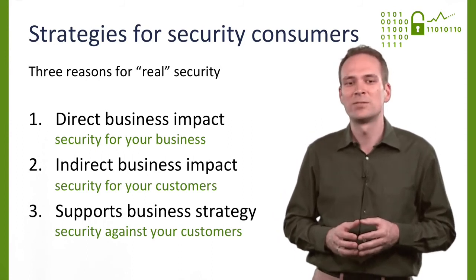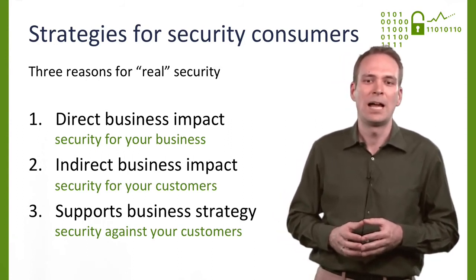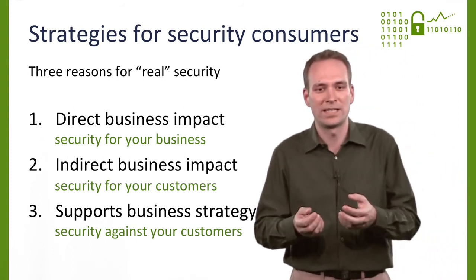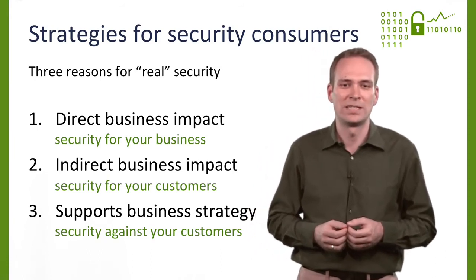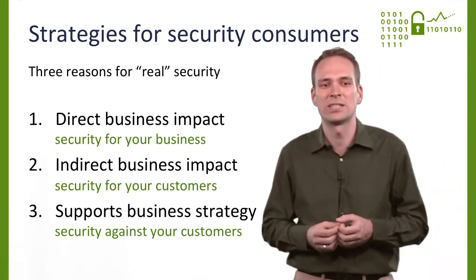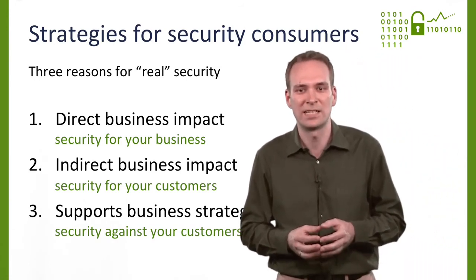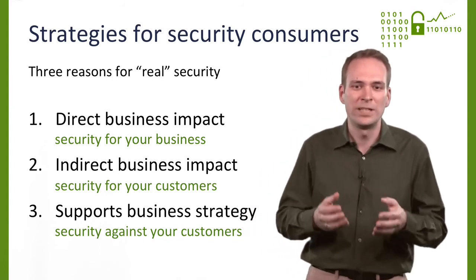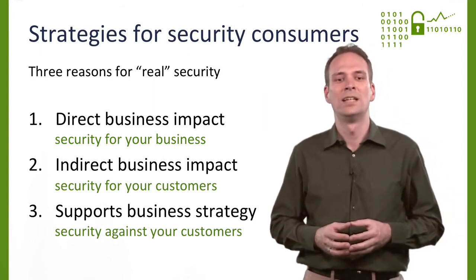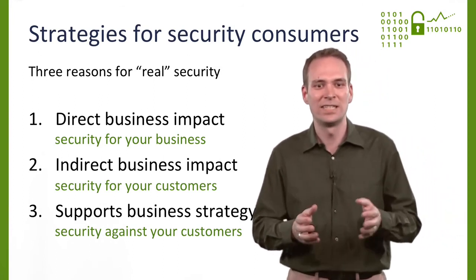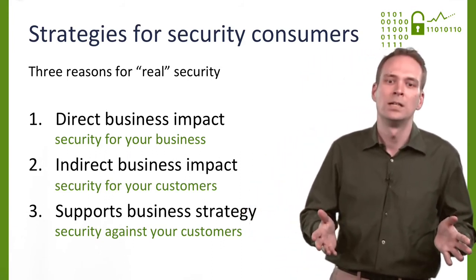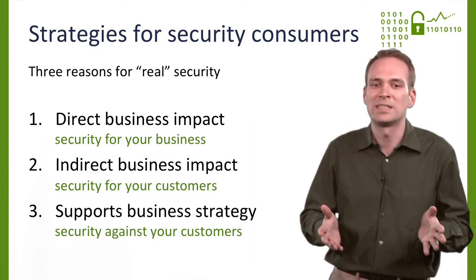The third reason to add real security is less charitable. I'm talking of cases where security supports the business model, for example by amplifying customer lock-in. Digital rights management, intentional incompatibility, and Ross's earlier example of cryptography in printer cartridges belong to this category. For comparison, reason three is when you add security against your customers. In all three cases, your organization has an interest in that the security mechanisms are not only efficient and cheap, but also effective in thwarting the attacker's intentions.